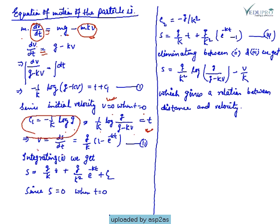V is dS/dt - velocity is rate of change of displacement. So V is dS/dt which equals g/K(1 - e^(-Kt)). So if you have here log(g/(g - KV)) equals Kt, and therefore...